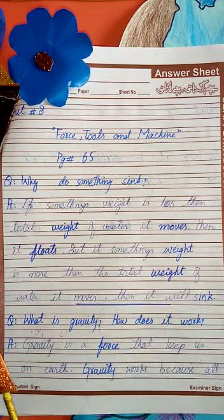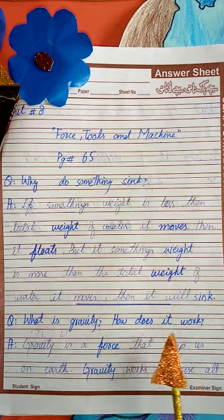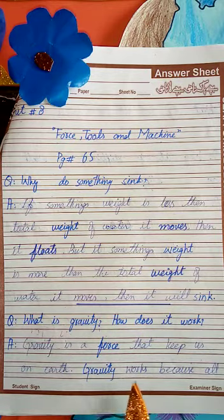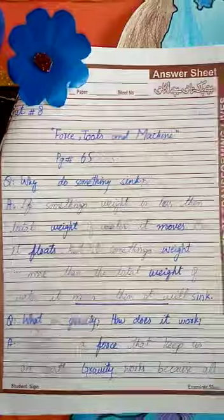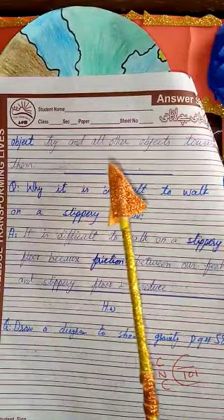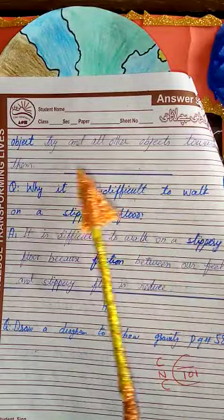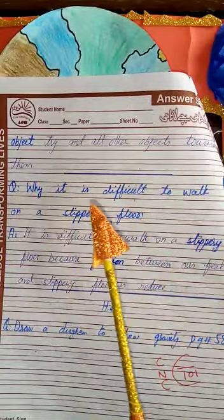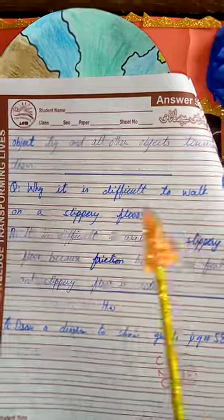Question number two: What is gravity and how does it work? Gravity is a force that keeps us on Earth. Gravity works because all objects try to attract all other objects towards them.